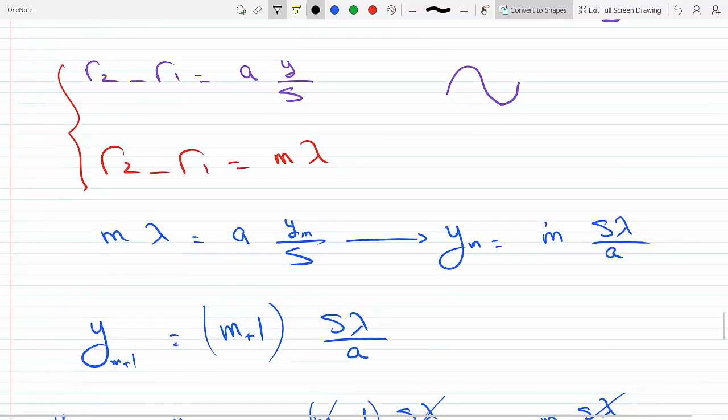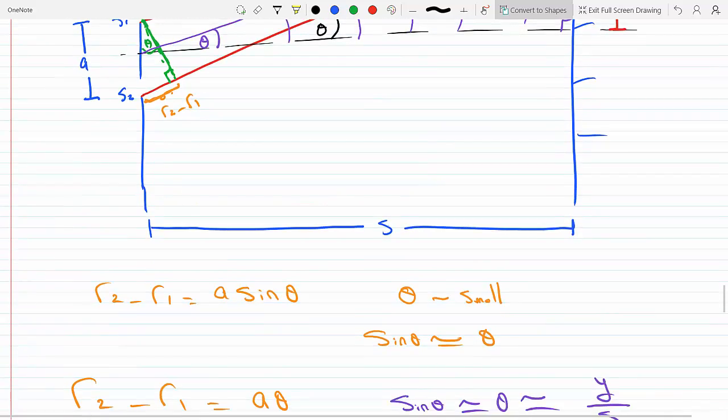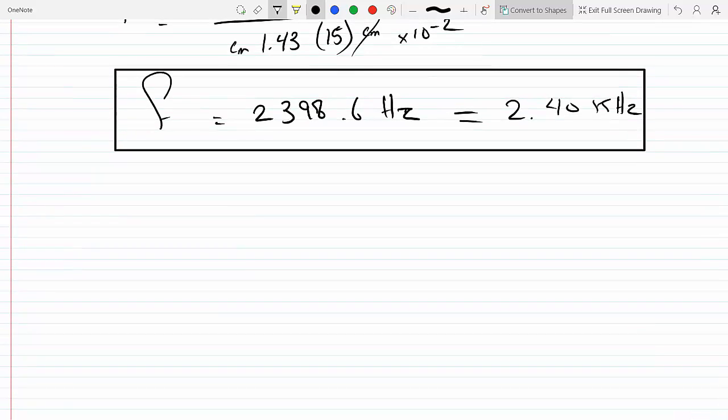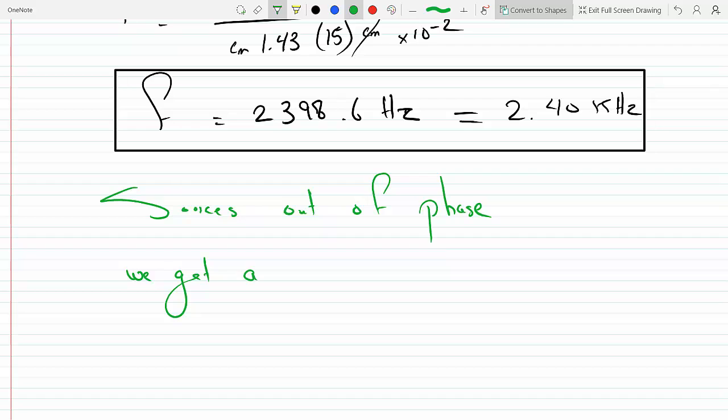The reason that it has a central minimum is because this is a Young's experiment with the sources being out of phase with each other. Sources out of phase, and that's why we get a central minimum.